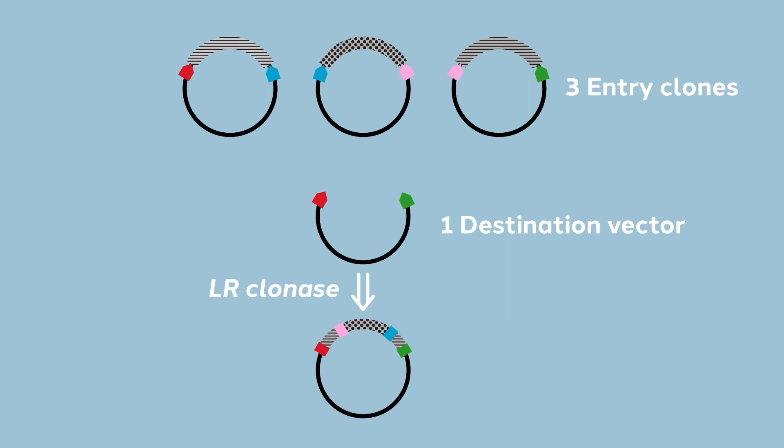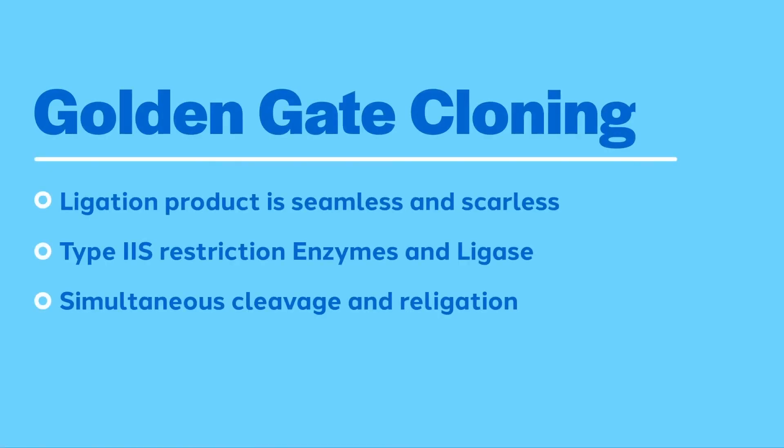The obvious downside is that the recombination sequences remain as scars. Gateway works if the scars are located in some sort of intervening sequence that is not part of your final processed mRNA. In contrast to gateway cloning, golden gate cloning is seamless and scarless. Golden gate cloning takes advantage of the unique features of type 2S restriction enzymes. This allows for a one-pot approach to your assembly reaction where engineered components are mixed together simultaneously with both the type 2S enzyme and ligase.